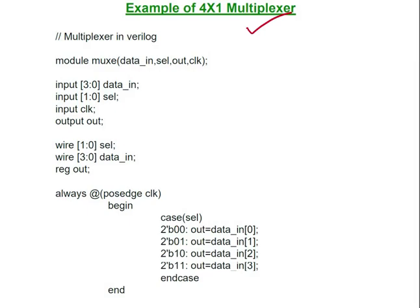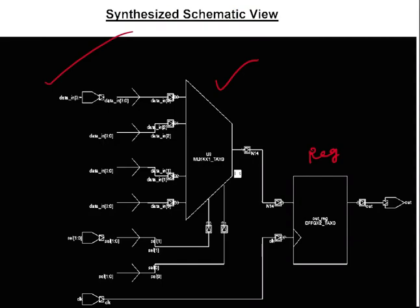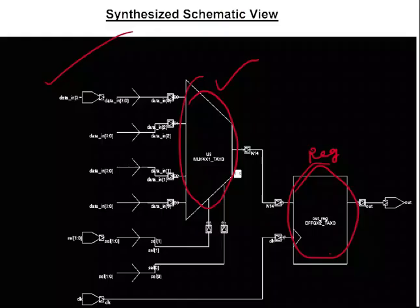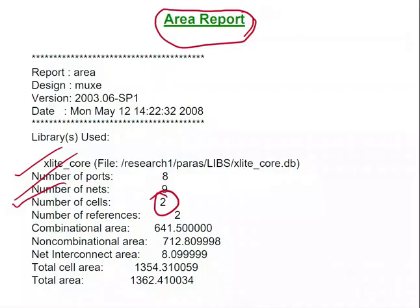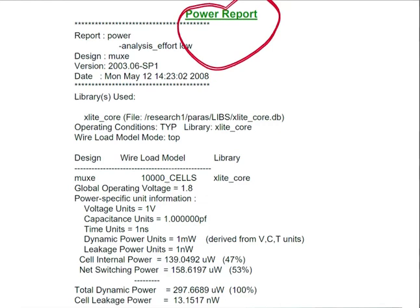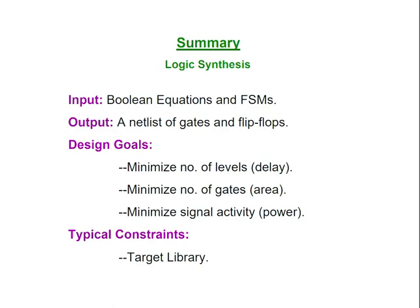As a final example: a 4-to-1 multiplexer RTL code synthesizes into an RTL-level circuit using one mux cell and one register cell from the cell library — two cells total. The synthesis tool output includes an area report: number of ports, number of nets, number of cells (two here — mux and register), combinational area, non-combinational area, and interconnect information.